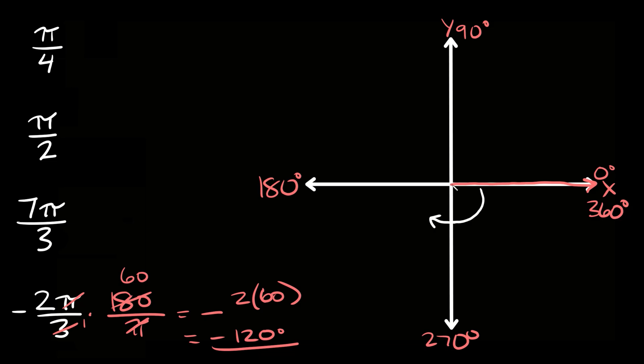So like right here. So then we'll draw our angle right there. So this angle right here is -2π/3 and we land in quadrant 3.